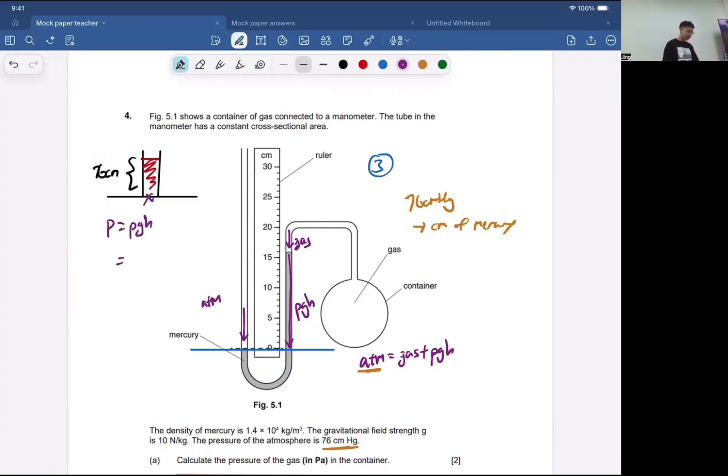So it'll be density ρgh. You just ask yourself: if I have this amount of Mercury, how much pressure will it be?